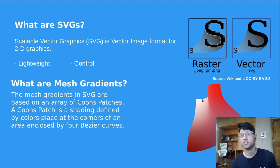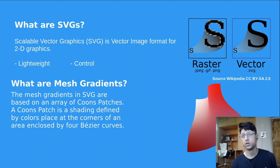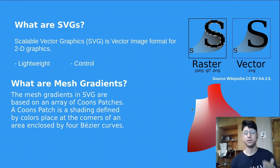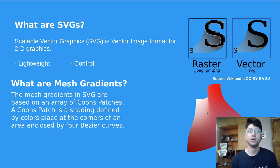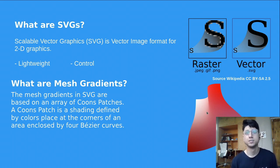There are four Bezier curves — one, two, three, and four — and four colors on each corner. When you interpolate between them, the final render you get is a Coons patch. When you have an array of them, it's mesh gradients.